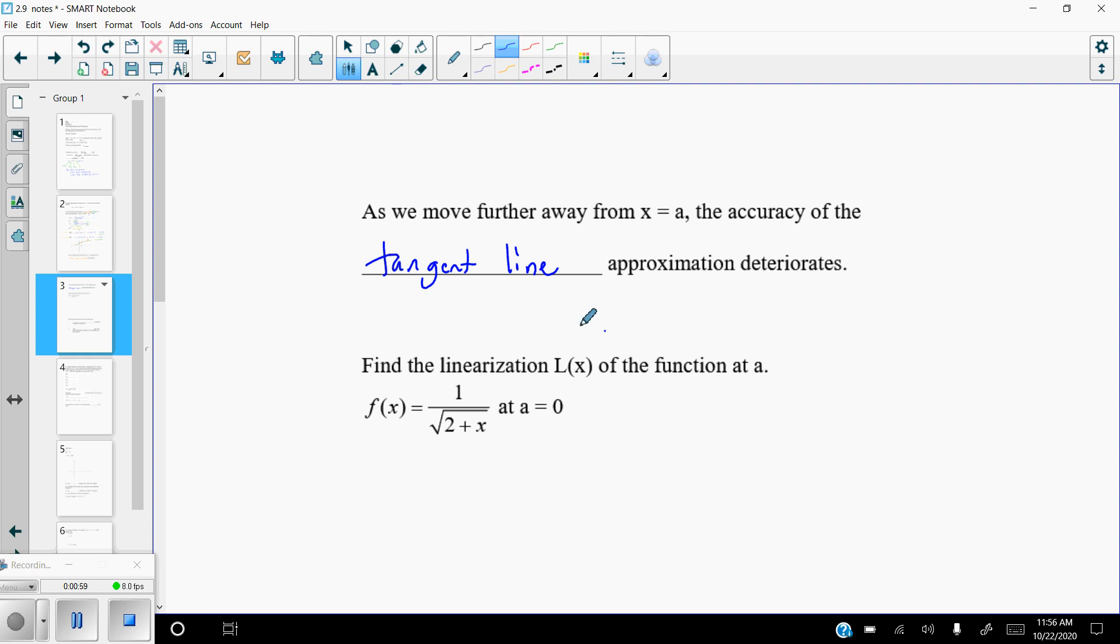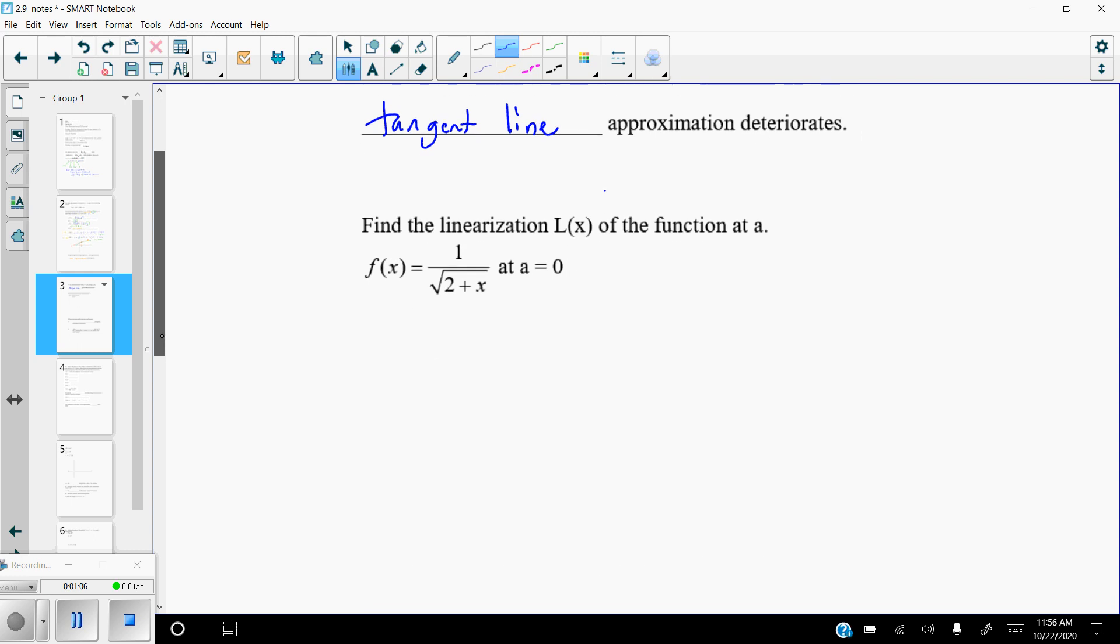Okay, so let's go ahead and find the linearization of the function at a. Notice we're not really doing any approximations here, we're actually just going to find the actual linearization function. In order to do that, we need x, we need y, we need slope. Well, they gave us x, because x is our a value, so we need to find y.